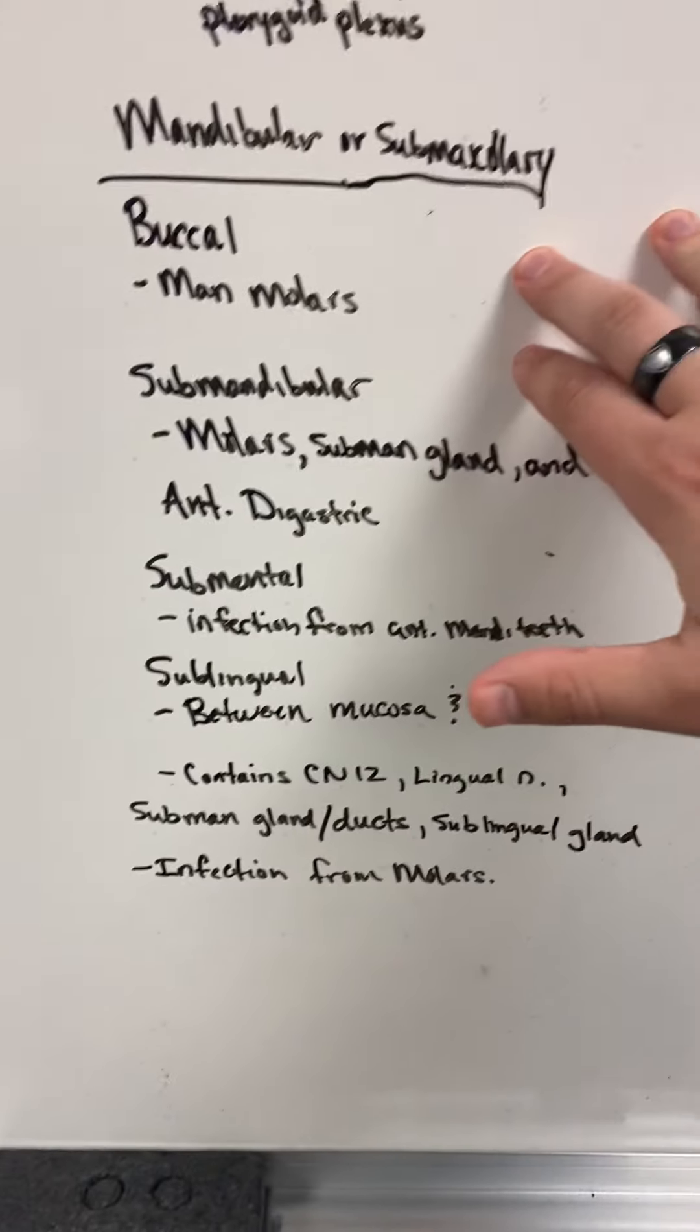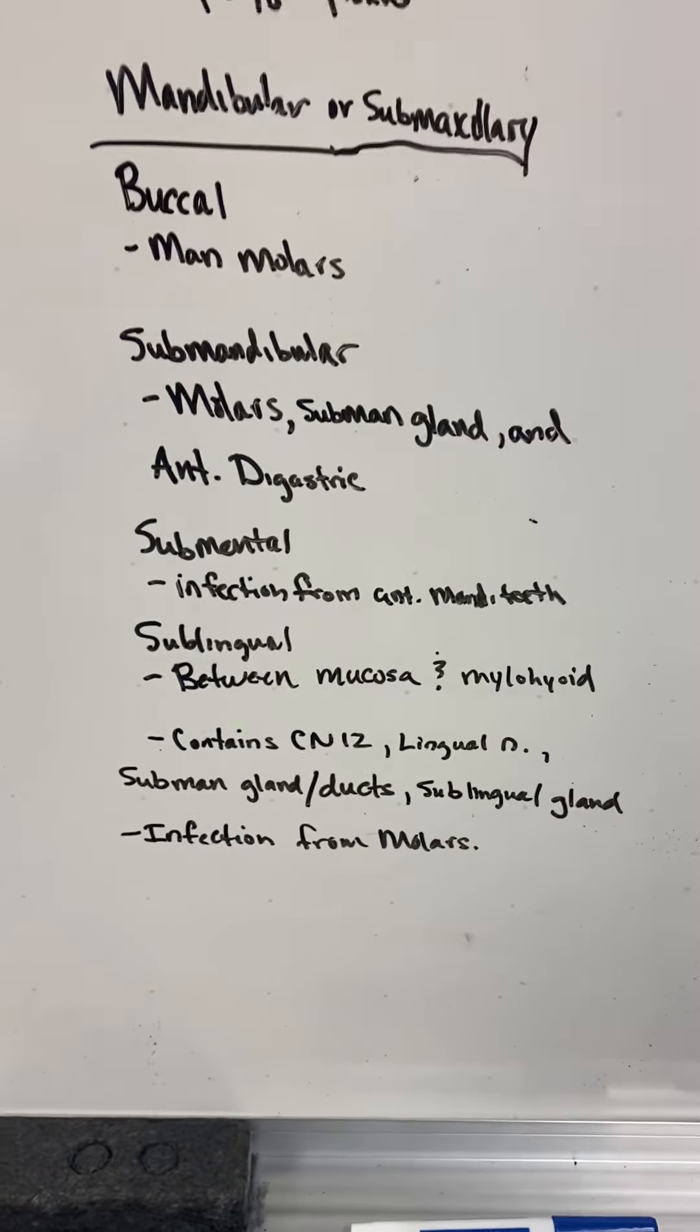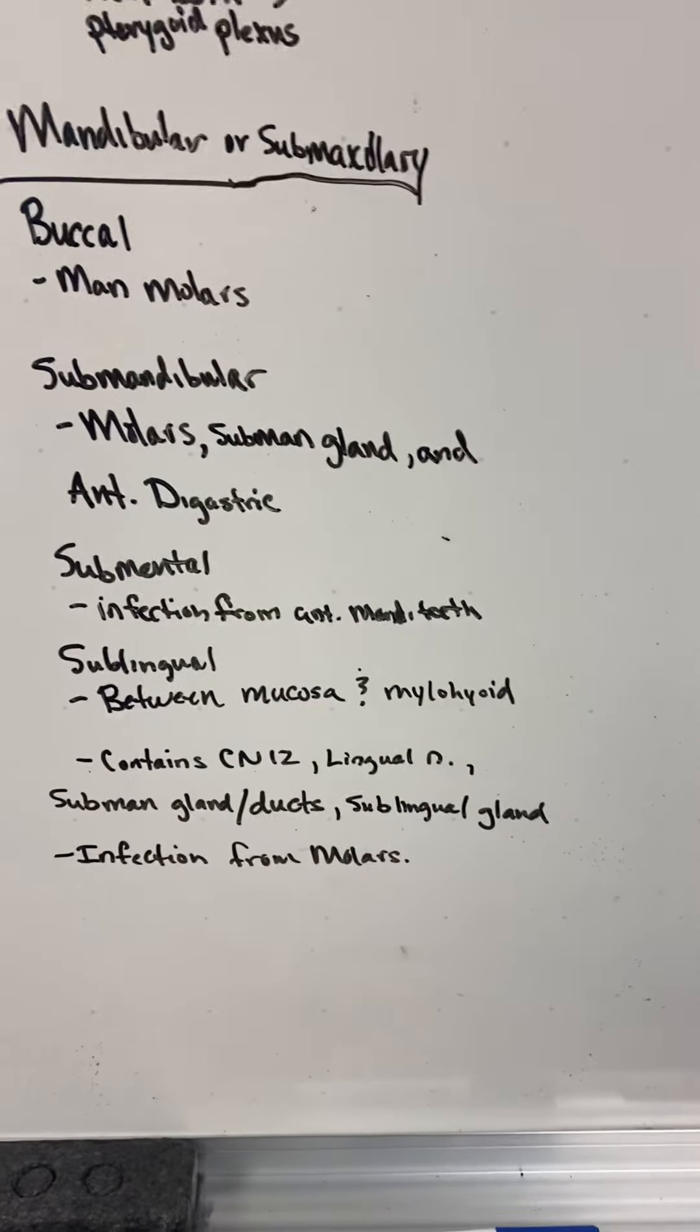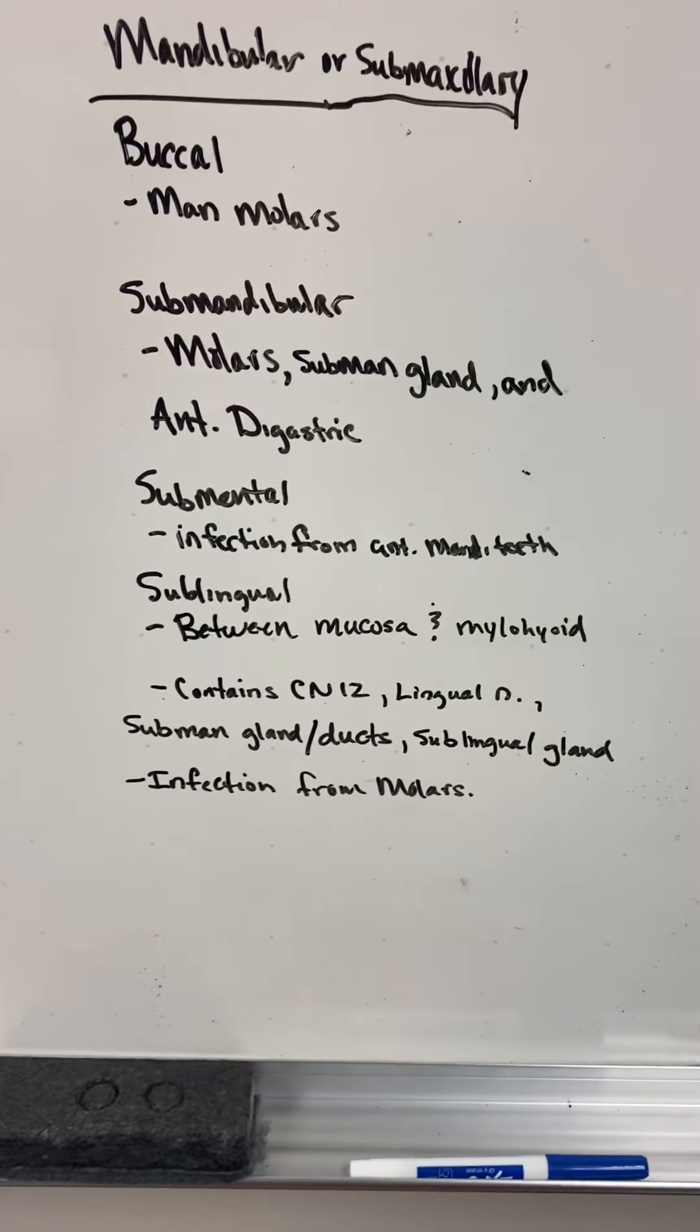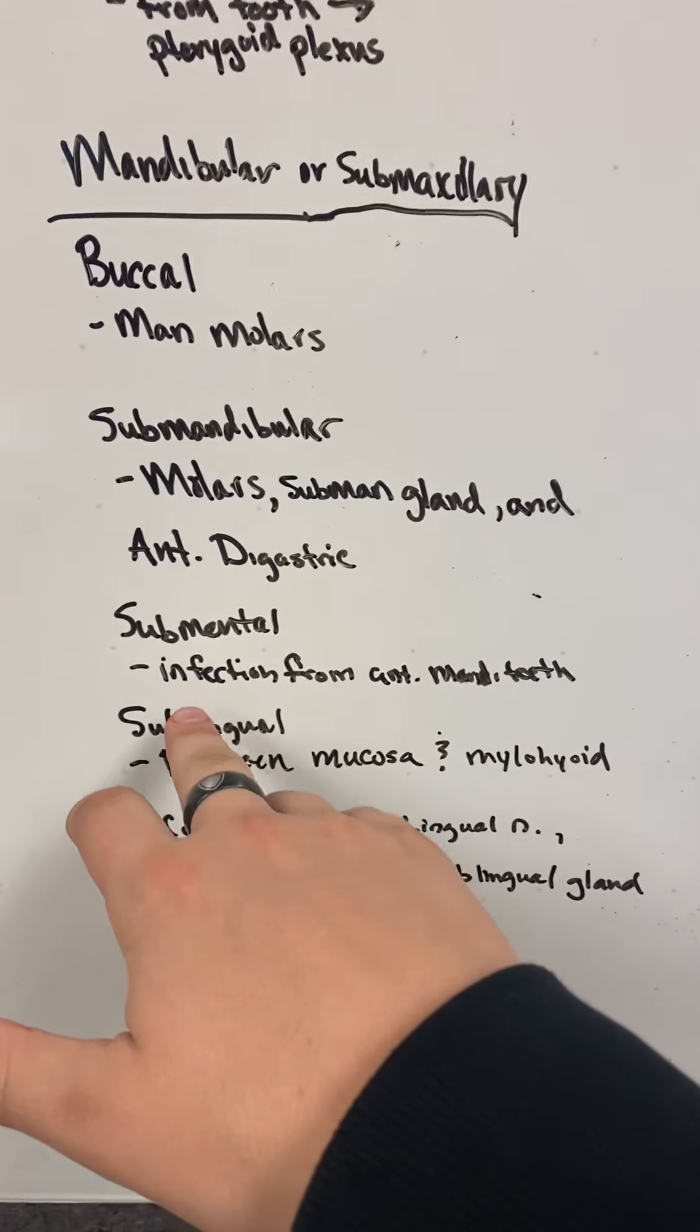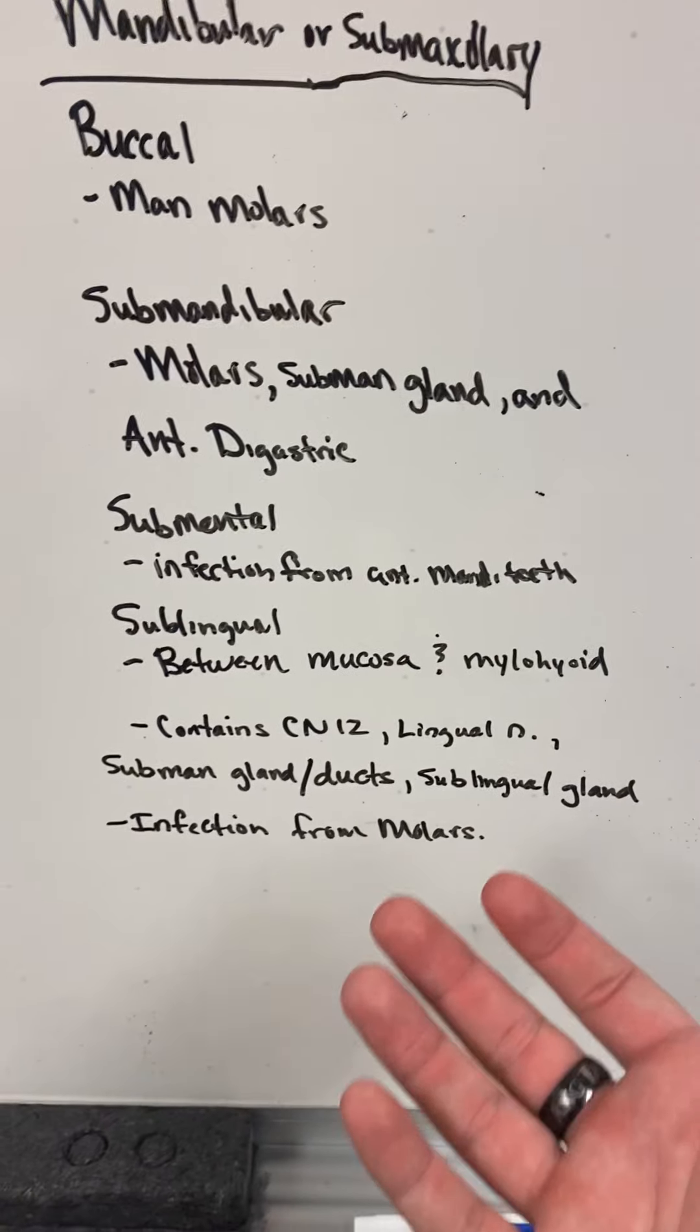Now we have the mandibular spaces. So it's going to be buccal, mandibular molars. Almost all these do your mandibular teeth. We have the submandibular with molars, submandibular gland, anterior digastric. We have the submental. Submental is the infection from the anterior mandibular teeth, so it's just those lower front teeth.